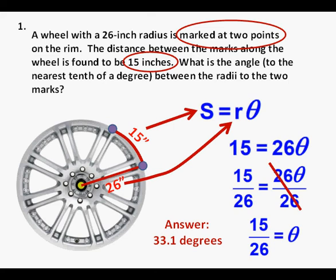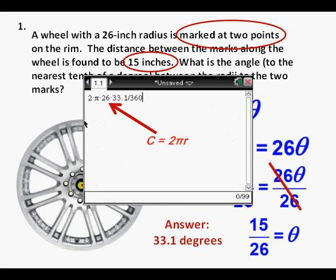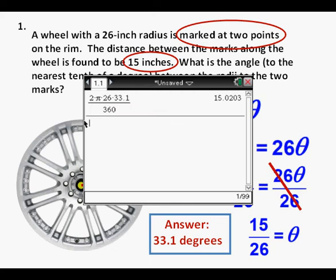As a check to see if my final answer is correct, I use the formula for circumference, which equals 2 pi r, and multiply by the ratio 33.1 over 360. We get very close to 15 inches as an arc length, verifying that our answer is correct. So we box it in as correct.